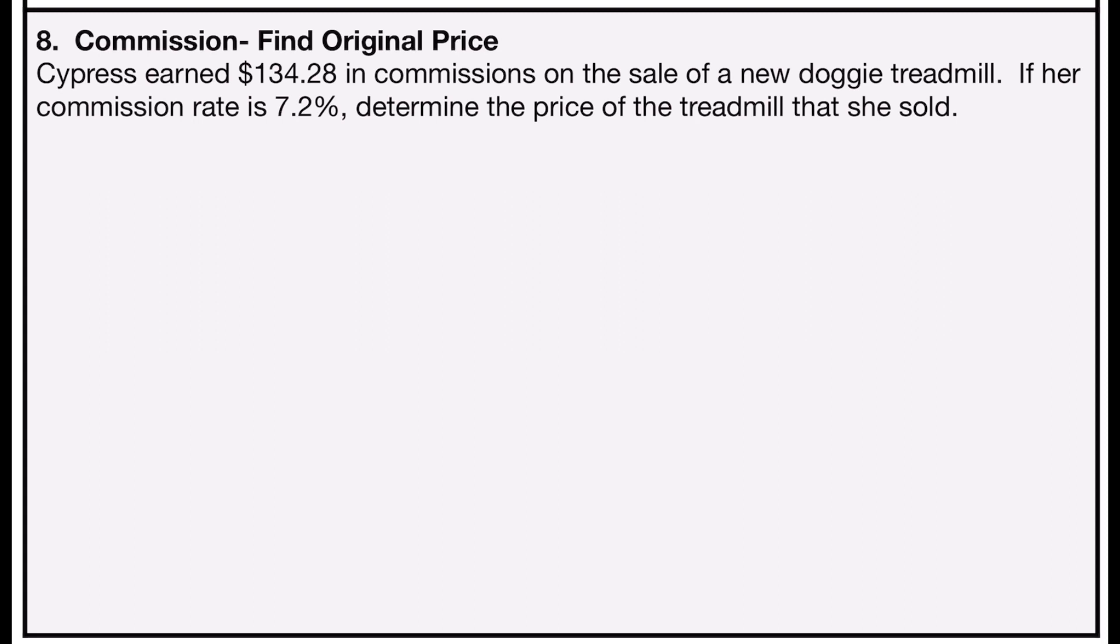Problem number eight also deals with commission, but this time you're asked to find the original price. It says Cypress earned $134.28 in commissions on the sale of a new doggy treadmill. If her commission rate is 7.2%, determine the price of the treadmill that she sold. So I'm looking for the total price in this problem, and unlike the others which involve multiplication, this will involve division. I'm going to take the $134.28, and this time I'm going to divide it by the 7.2% in decimal form, which would be 0.072. If I punch that into a calculator, 134.28 divided by 0.072, I will get $1,865, which means the original price of the doggy treadmill was $1,865.